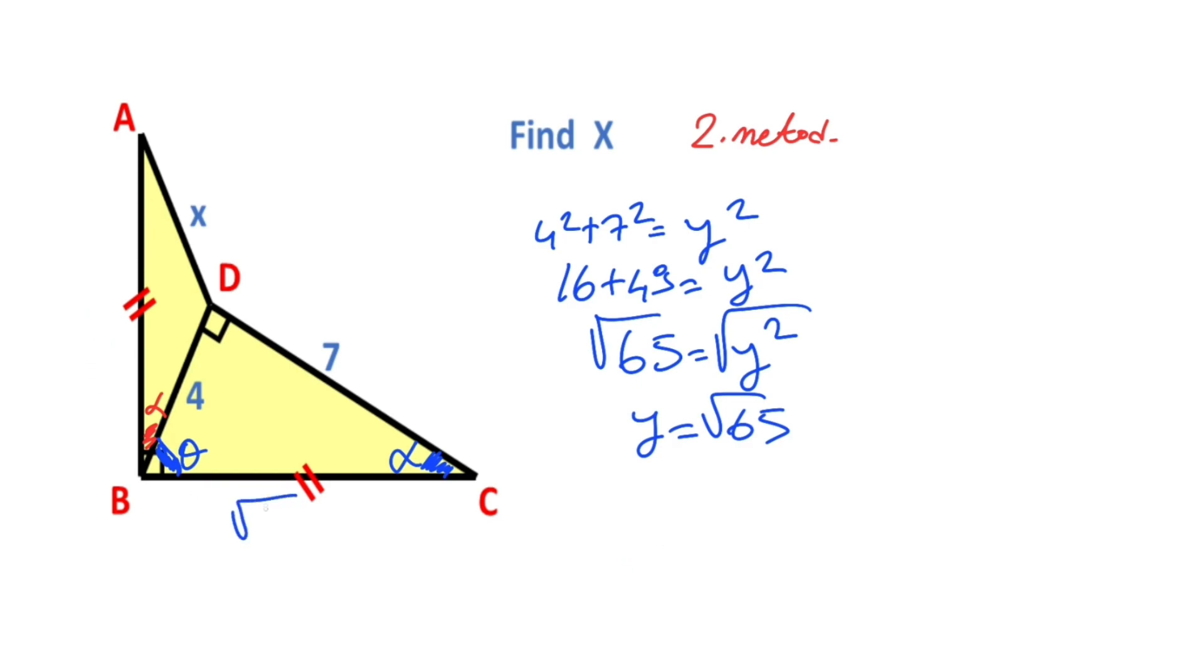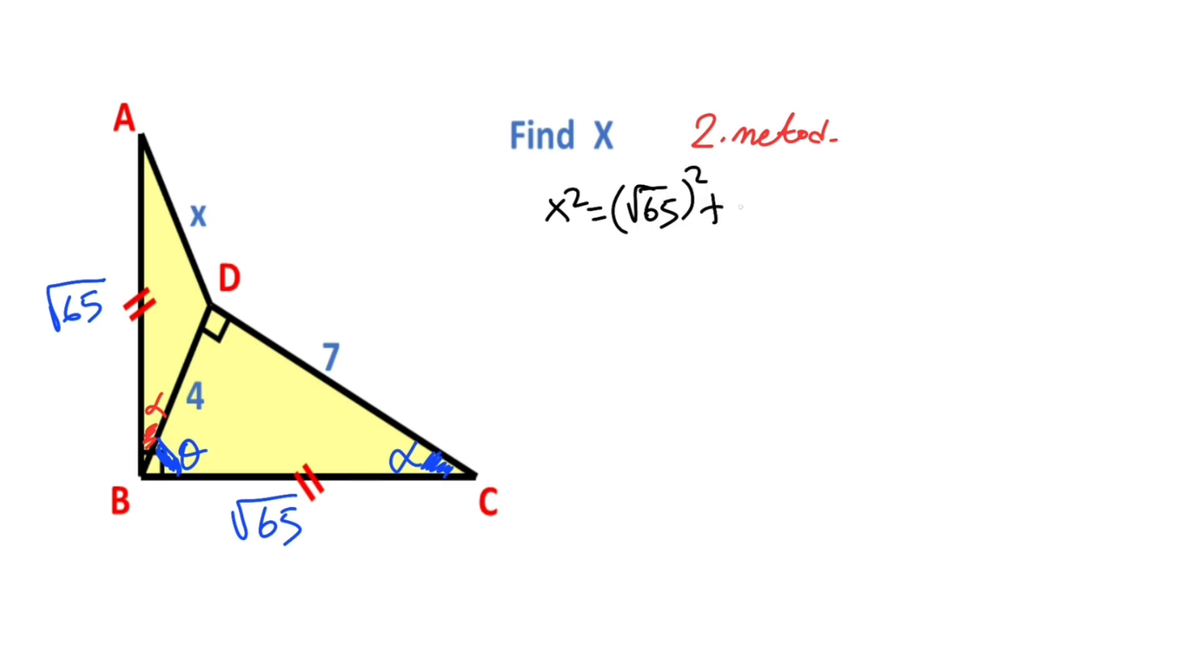So these are root 65. Notice that if we apply cosine rule for triangle ABD, we get the value of X. For X squared equal root 65 whole squared plus four squared minus two times four times root 65 times cosine alpha. So X squared equals 65 plus 16 minus eight times root 65 times cosine alpha.